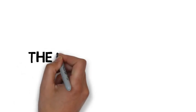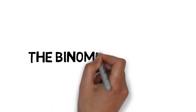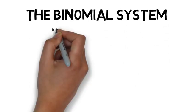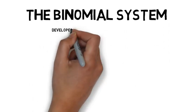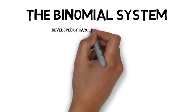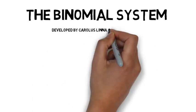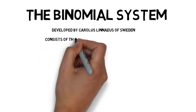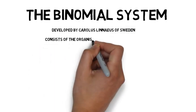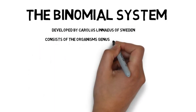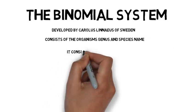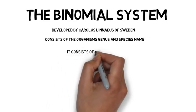The binomial system. The binomial system of scientifically naming organisms was developed by Carolus Linnaeus of Sweden. It consists of the organism's genus and species name, and thus is called binomial. It consists of seven levels.